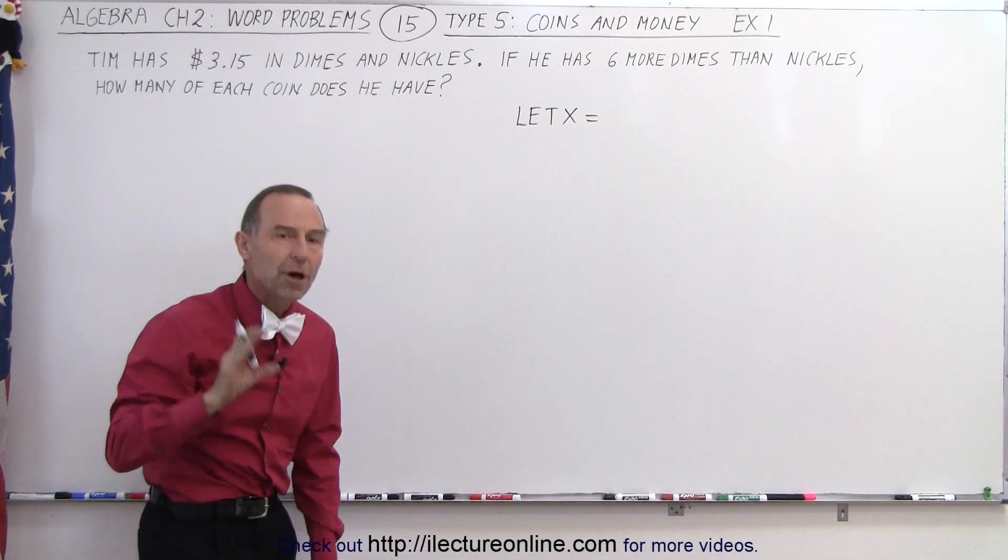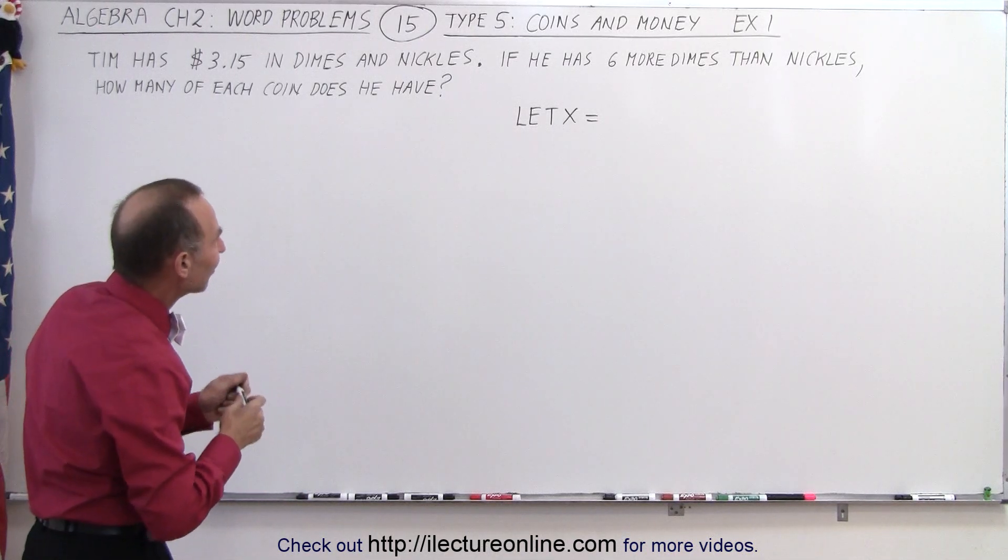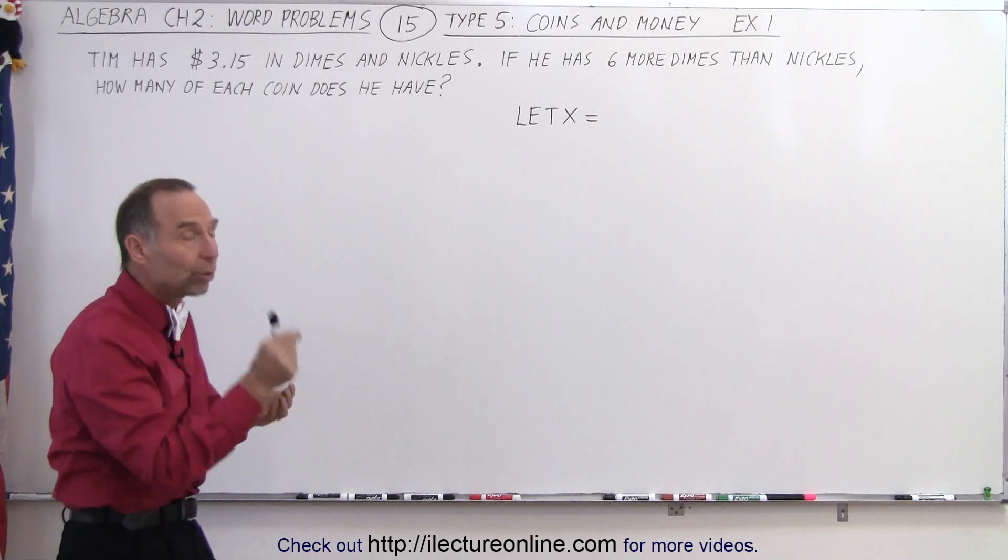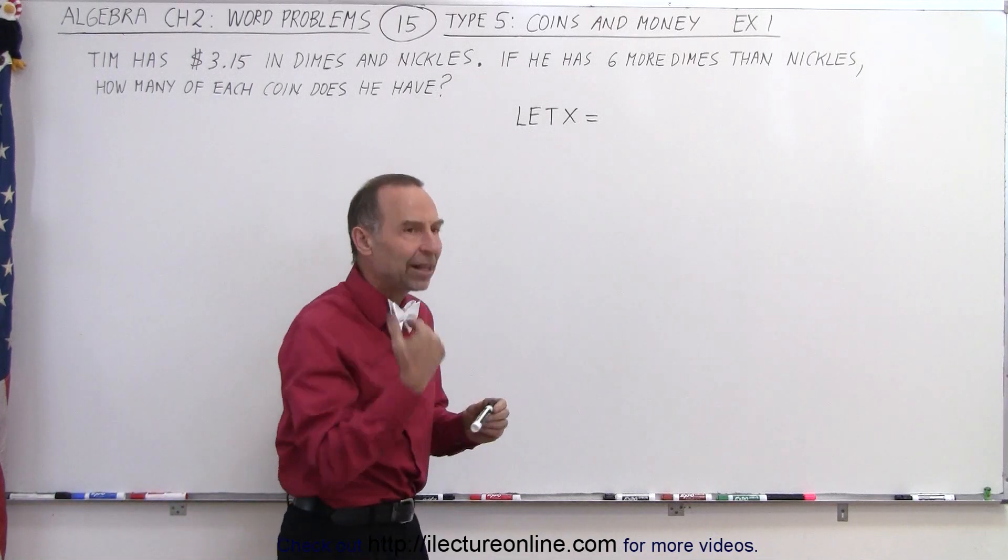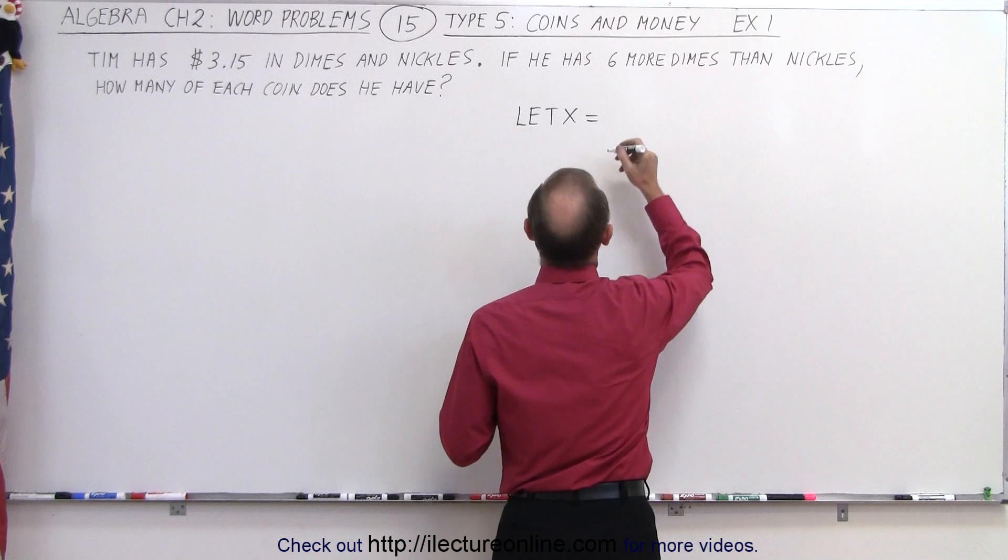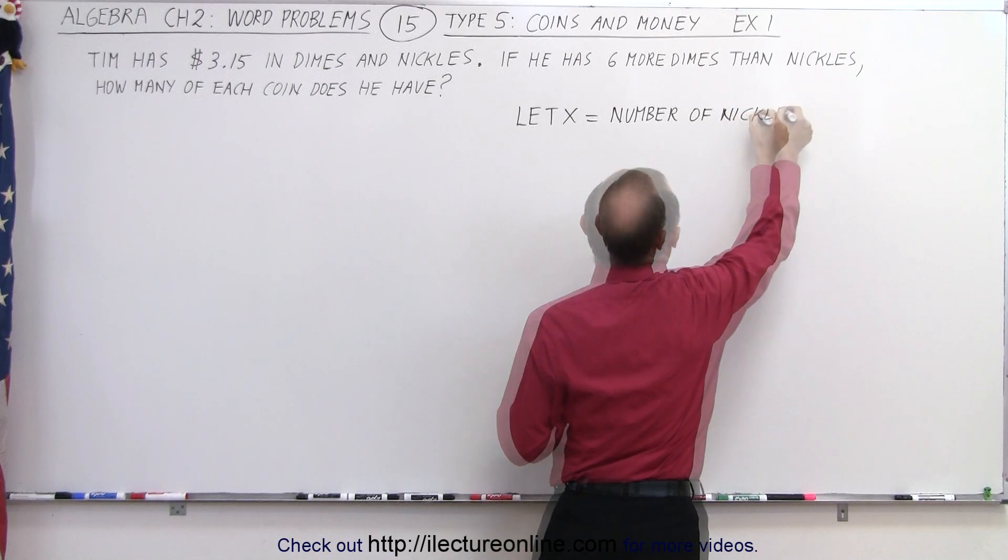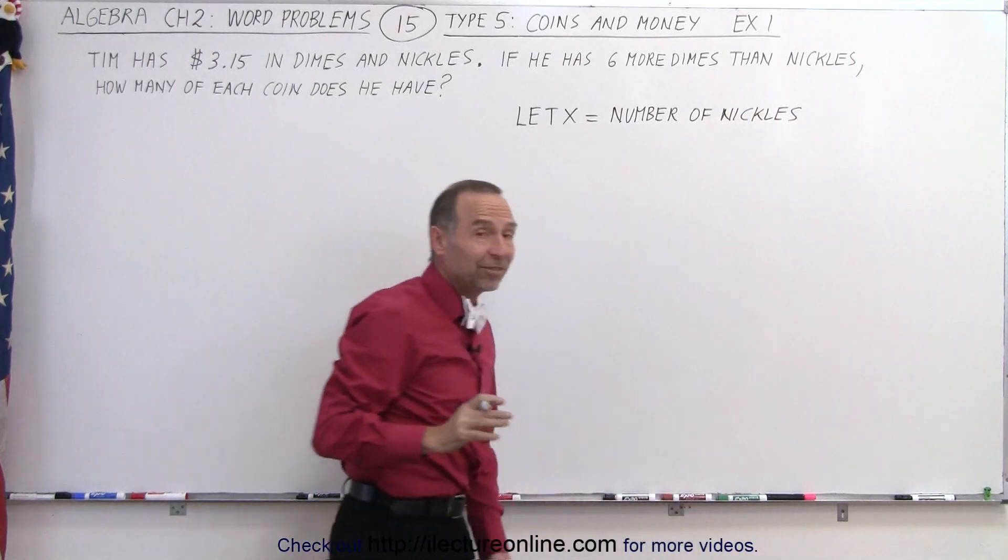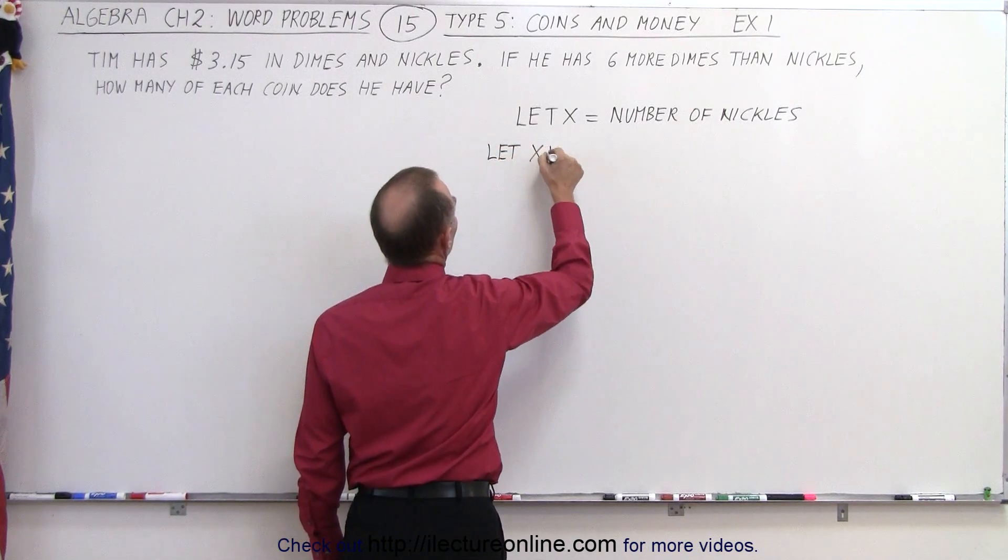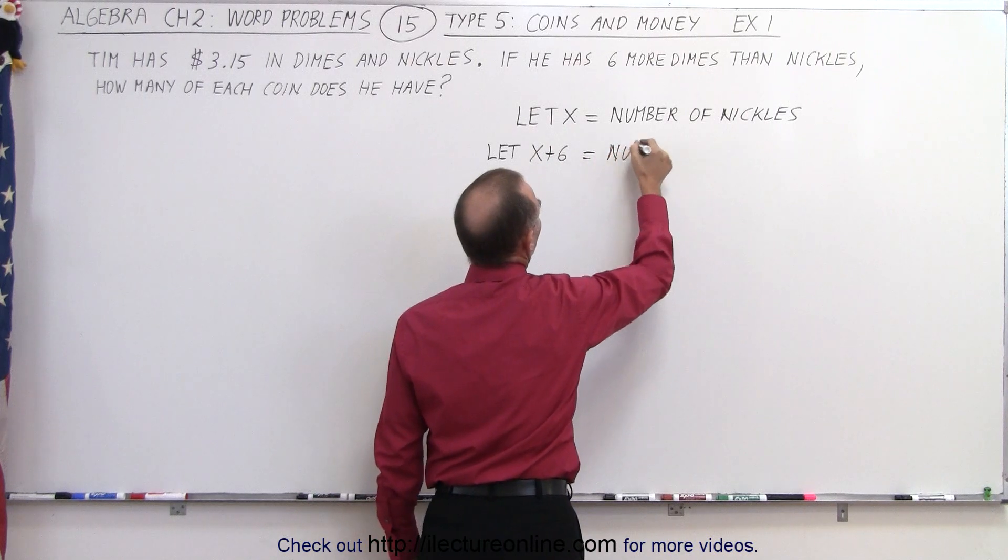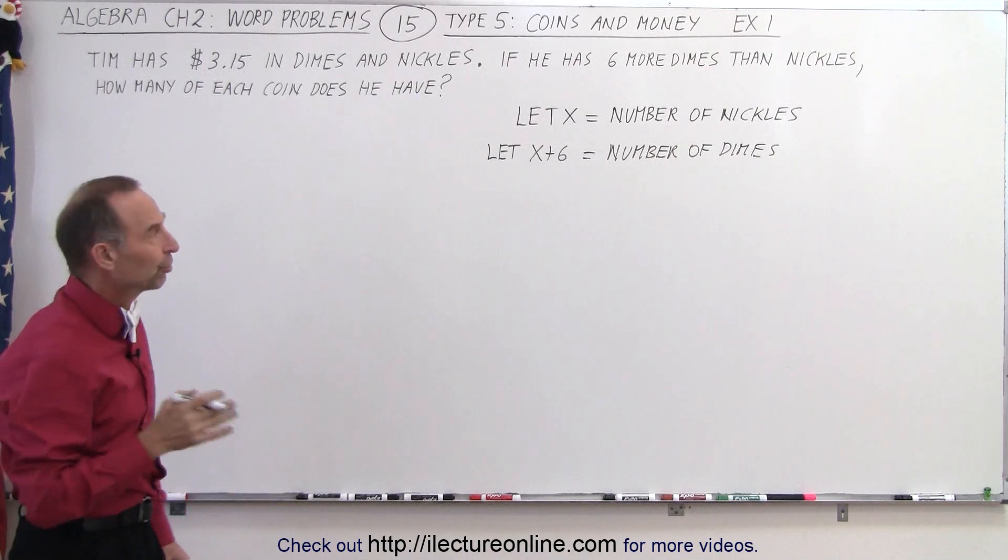Now we're going to let it equal the number of the coin for which it has the fewest of. So it has dimes and nickels and it indicates that it has more dimes than nickels. So therefore we're going to let x equal the number of nickels. Not the value of the nickels but the number of nickels. So let x equal the number of nickels. Now if it has six more dimes than nickels then we can write let x plus six equal the number of dimes. So now we have expressed the number of nickels and the number of dimes in terms of x.